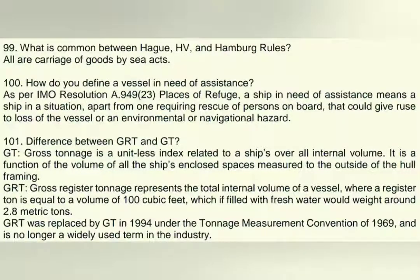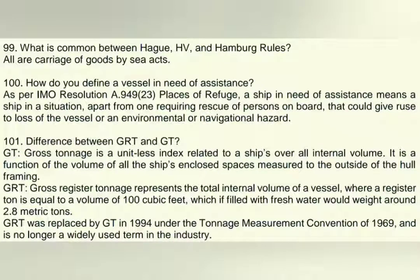Difference between GRT and GT: GT stands for gross tonnage. It is a unitless index related to a ship's overall internal volume and is a function of the volume of all the ship's enclosed spaces measured to the outside of the ship's hull framing. GRT, or gross register tonnage, represents the total internal volume of a vessel where a register ton is equal to a volume of 100 cubic feet, which if filled with fresh water would weigh around 2.8 metric tons. GRT was replaced by GT in 1994 under the Tonnage Measurement Convention of 1969 and is no longer a widely used term in the industry.